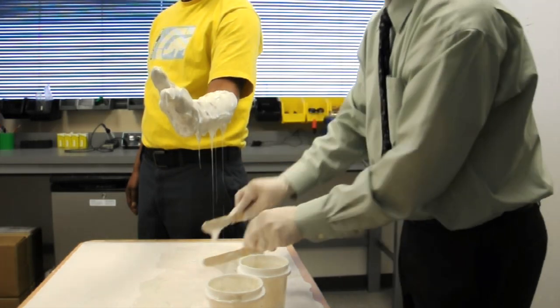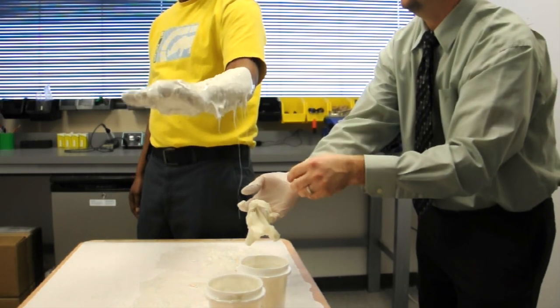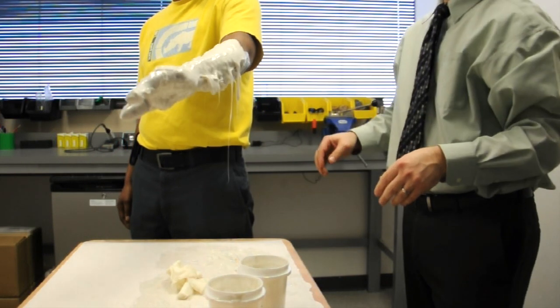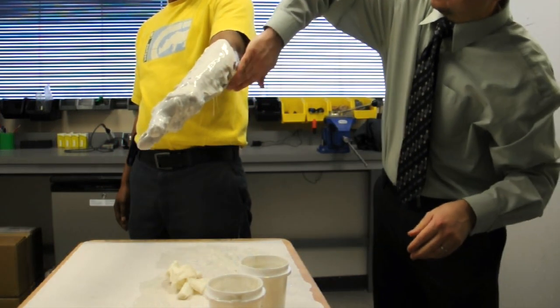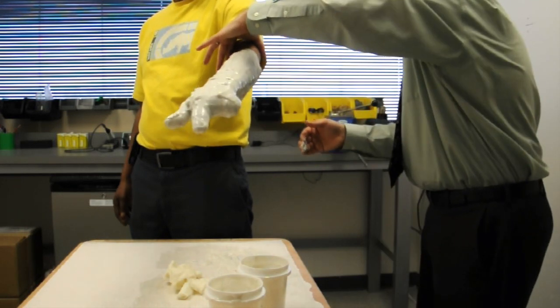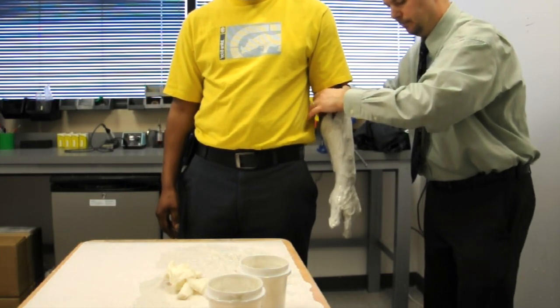After the limb's fully covered, you can remove your gloves and try to keep as much silicone on the limb as possible. Any areas that are dropping off, just sort of reapply those onto their limb.